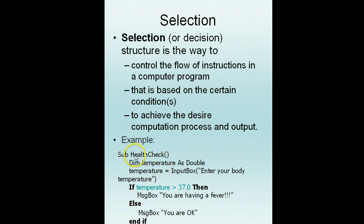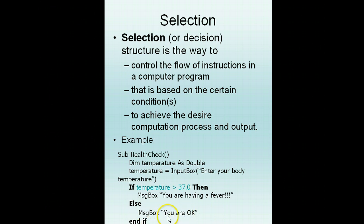One example is a health check where we have a temperature variable declared as a double. We take the temperature from user input. And if temperature is above 37.0 degrees Celsius, then we output a message box saying you are having a fever. Else, message box: you are doing okay.